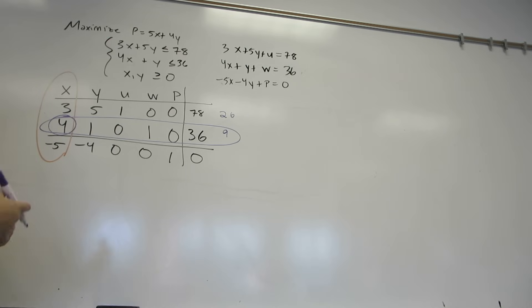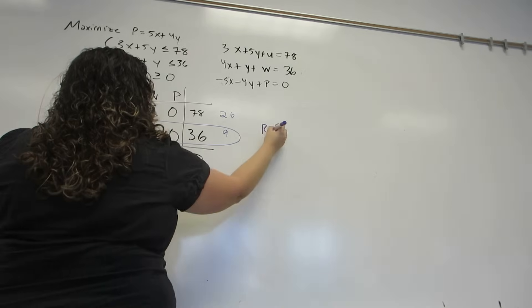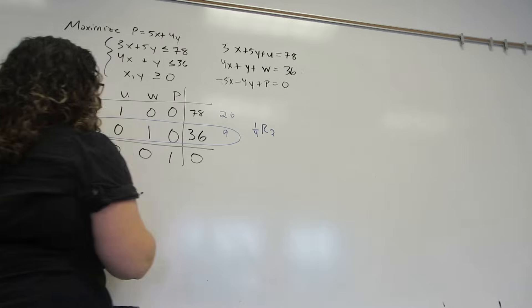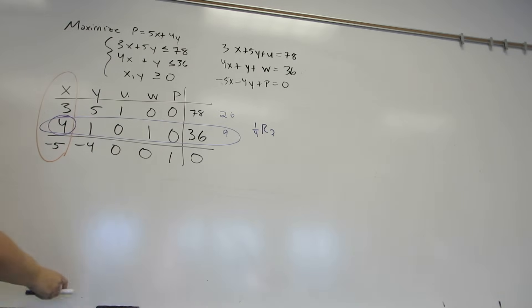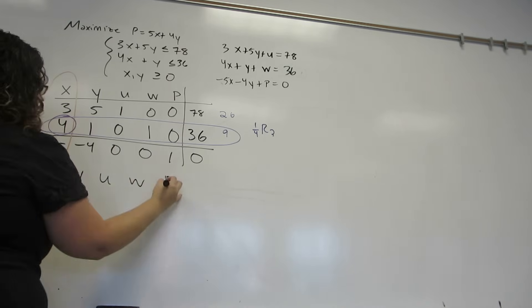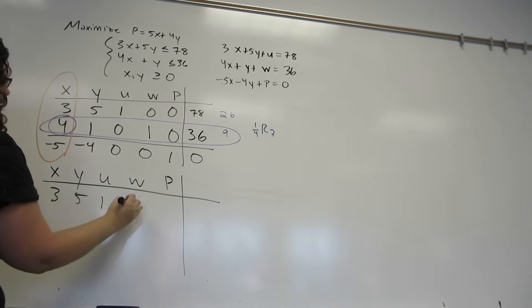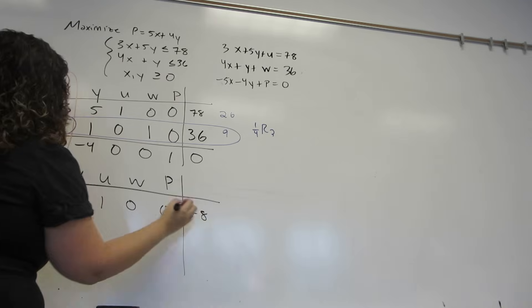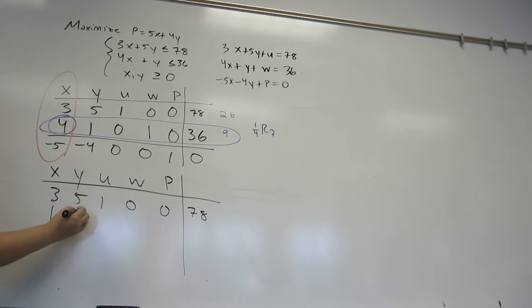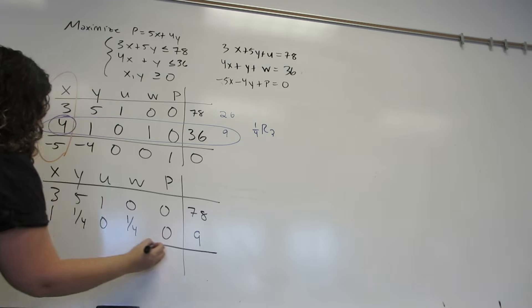Now, the first thing to do is to use row operations to make that a 1. So we're going to replace row 2 with 1 4th row 2, which has the effect of dividing this whole row by 4, thus getting a 1 right here. So we end up with 1, 1 4th, 0, 1 4th, 0, 9.